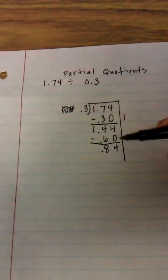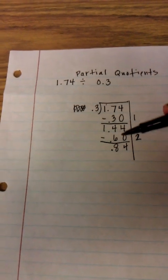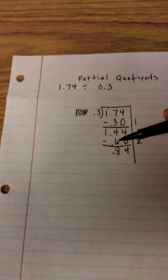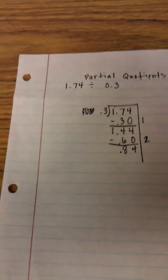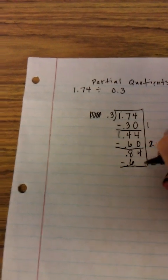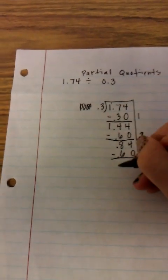So now I'm left with 84 hundredths, and I ask myself, do I have at least, well, I know that I have at least 2 groups of 3 tenths, because that would give me 6 tenths, and I do have at least 6 tenths left. So I multiply by 2 whole, and I subtract. 4 hundredths minus 0, 8 tenths minus 6 tenths.